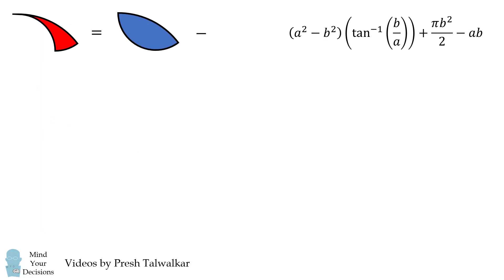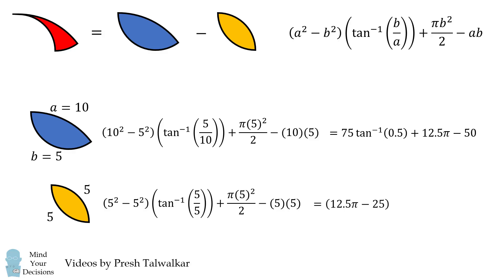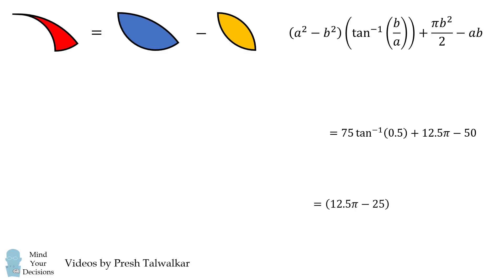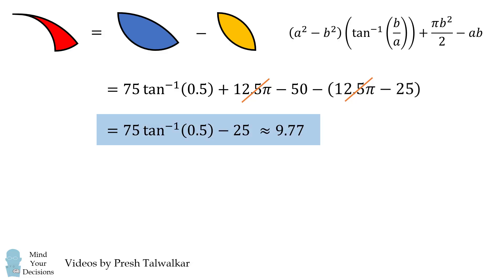Now we apply this formula to the two lenses. For the blue shape, A equals 10 and B equals 5. Substituting gives 75 times the inverse tangent of 0.5 plus 12.5 pi minus 50. For the yellow shape, A and B both equal 5, giving 12.5 pi minus 25. Subtracting the second from the first, the 12.5 pi terms cancel, and we get the answer: 75 times the inverse tangent of 0.5 minus 25, which is approximately 9.77.